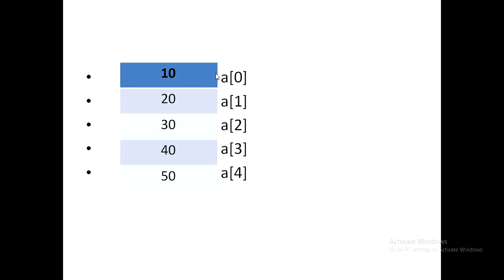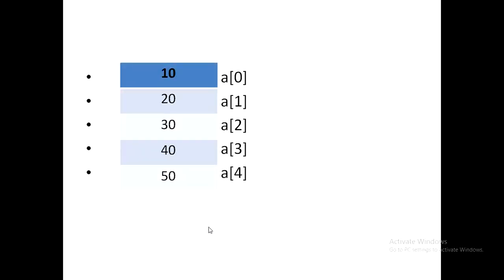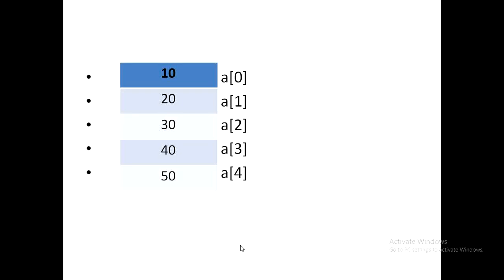An array can be initialized at the same time as the declaration — meaning we assign values while declaring the array. If we use n number of elements in the array, the index range starts from 0 to n-1. Here we have 5 elements, so the range is 0 to 4. This is how values are stored in memory and how initialization is done in arrays. Thank you, students!